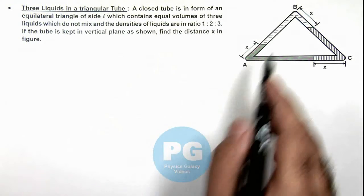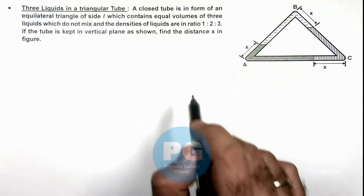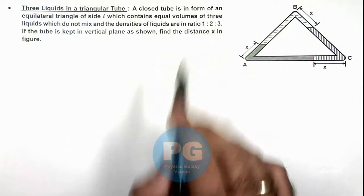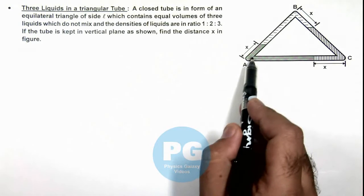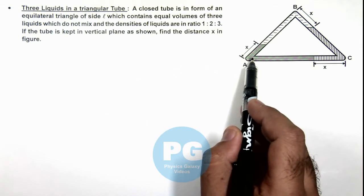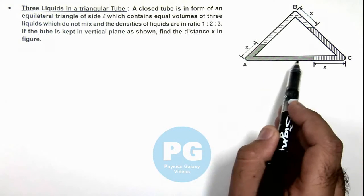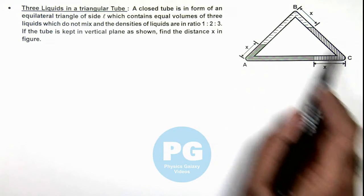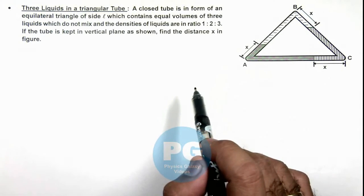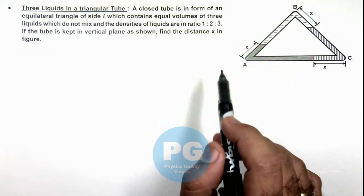We can see the liquids are considered to be of densities ρ, 2ρ, and 3ρ. The one at the bottom must be the heaviest liquid, so this will have density 3ρ, this would be 2ρ, and the top one will be of the lighter density ρ.